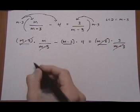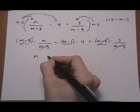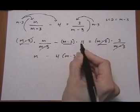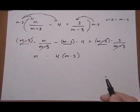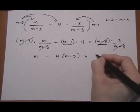So that leaves me with m for the first term. And then take away 4 times m minus 3. So I just switched the order here of the 4 and the m minus 3, which is fine because they're being multiplied. Equals 3.